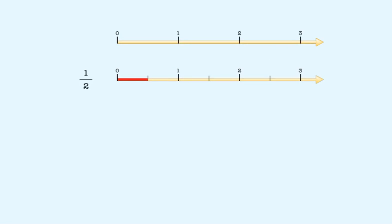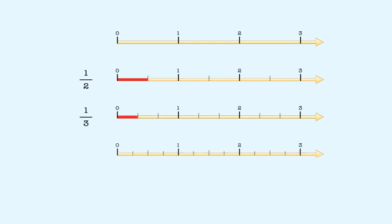To compare unit fractions, let's start by using a number line. You already know that when we divide one whole into halves, we get two equal parts. When we divide one whole into thirds, we get three equal parts. When we divide one whole into fourths, we get four equal parts. And so on. So you can see that when we split the whole into more parts, each part gets smaller.